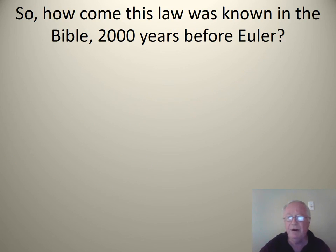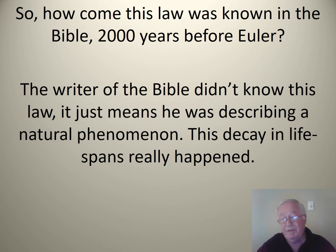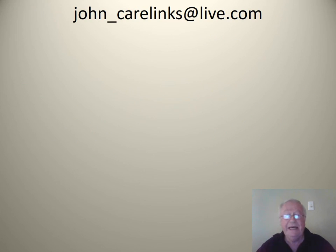So how come this was known in the Bible 2000 years before Euler discovered the law? The writer of the Bible I believe didn't know this law, it just means that he was describing a real natural phenomenon. This decay in lifespan really happened and what you are seeing here is a true record. It's possible that you might not believe that but you might say well the person who wrote down the numbers knew the exponential decay law. Well again this makes it something outside of human experience. It makes it something which is impossible for humans to have authored. So basically two possibilities. Either it really happened or 2000 years before Euler discovered the law that law was known. Makes me believe that the Bible is something special outside of human design.